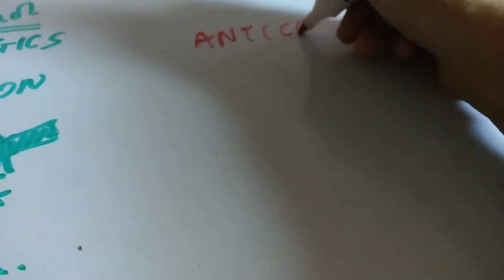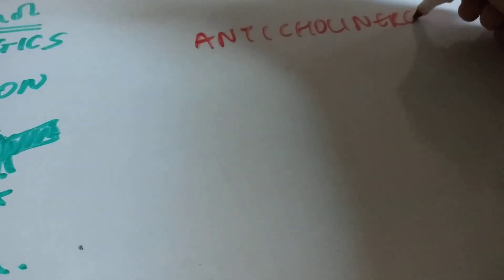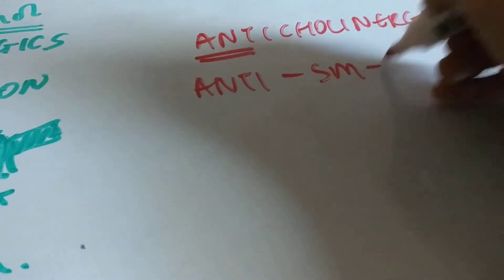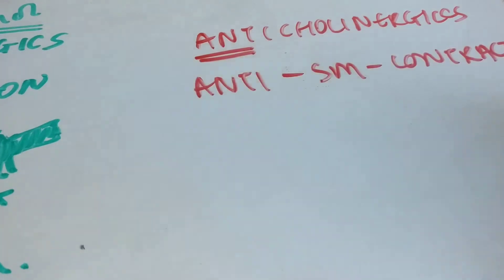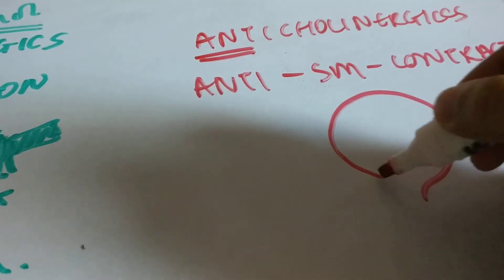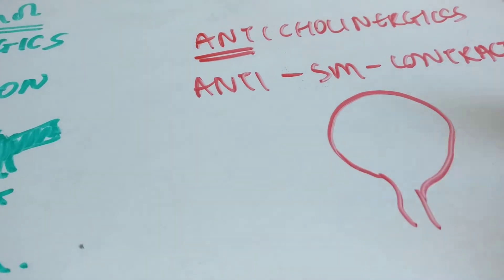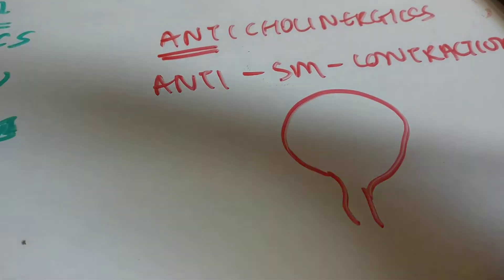Now let's come to anticholinergics. Anticholinergics work against smooth muscle contraction, so they inhibit the contraction of the smooth muscle of the bladder wall. In which conditions would you use an anticholinergic?